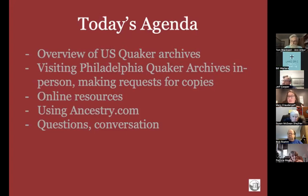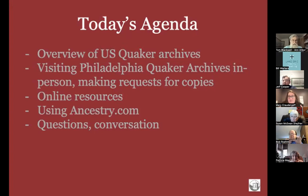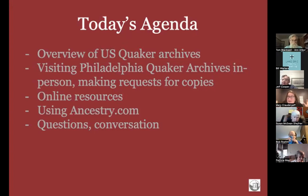First, I'll give an overview of United States Quaker archives generally, then talk about visiting Philadelphia Quaker archives in person — that's Haverford College and Swarthmore College repositories — and how to make requests for copies. Then I'll talk about a couple of different online resources available, including one of the biggest: Ancestry.com, which has over 11 million Quaker records available.